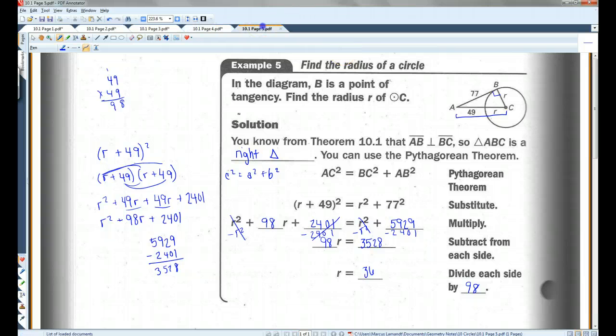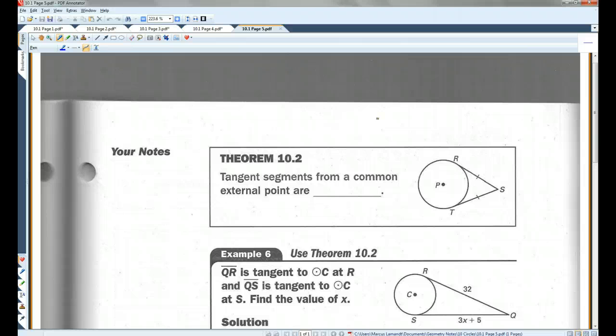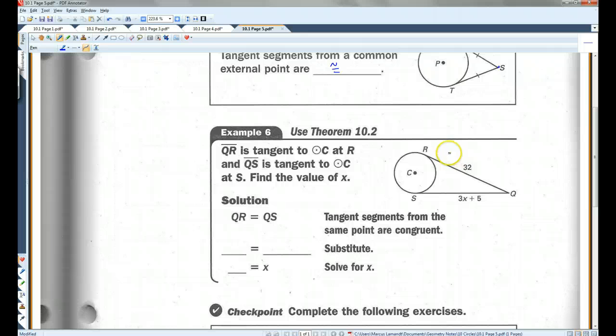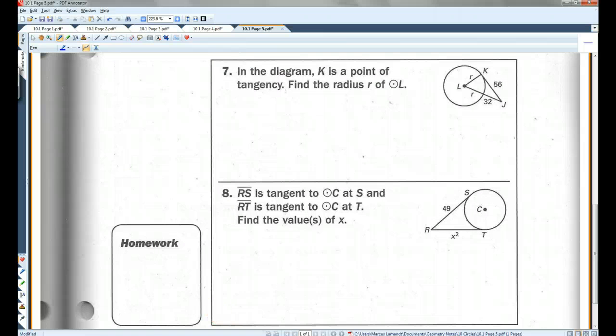Last page. Tangent segments from a common external point are congruent. Anytime you have two tangent lines intersecting, the segments they make are congruent to each other. QR is tangent to circle C at R, and QS is tangent to circle C at S. Find the value of X. The theorem we just learned says that these segments are congruent. So, 32 equals 3X plus 5. If I subtract 5 from each side, I'm going to get 27 equals 3X, and I can divide by 3. 27 divided by 3 is 9. I'll let you guys do the checkpoint, and that's all.